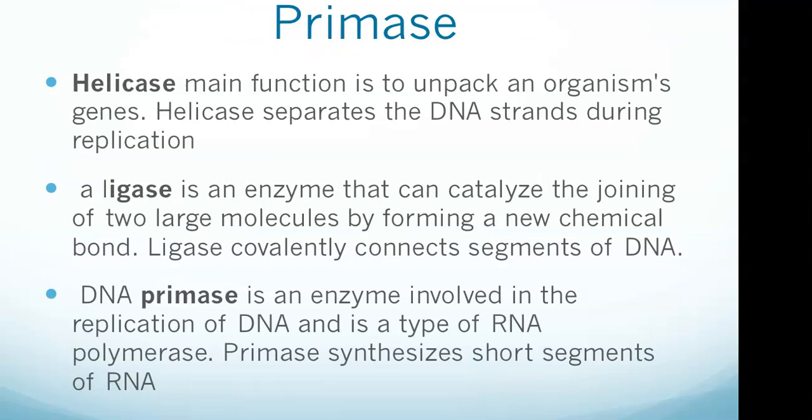Now we'll look at helicase, ligase, and primase. Helicases are a class of enzymes vital to all organisms; their main function is to unpack an organism's genes. They are motor proteins that move directionally along a nucleic acid phosphodiester backbone, separating two nucleic acid strands such as DNA and RNA, using energy from ATP hydrolysis. There are many helicases representing the great variety of processes in which strand separation must be catalyzed. Approximately 1% of eukaryotic genes code for helicases. The human genome codes for 95 non-redundant helicases: 64 RNA helicases and 31 DNA helicases.